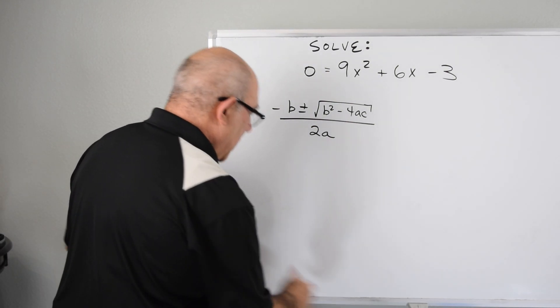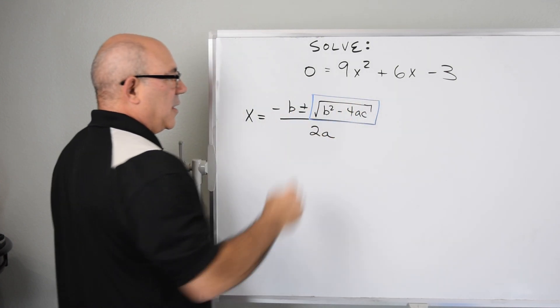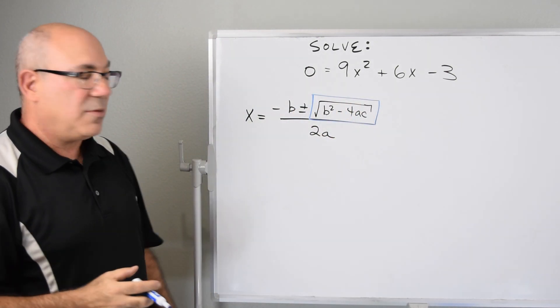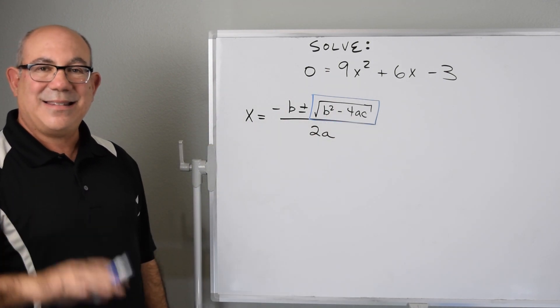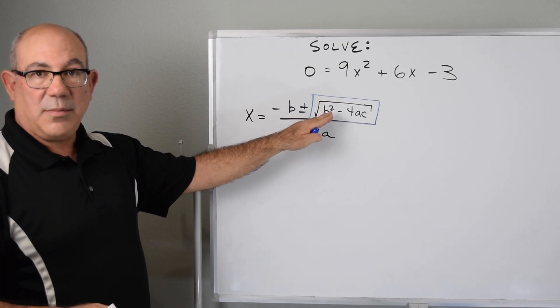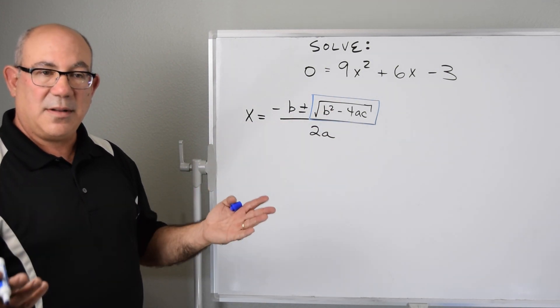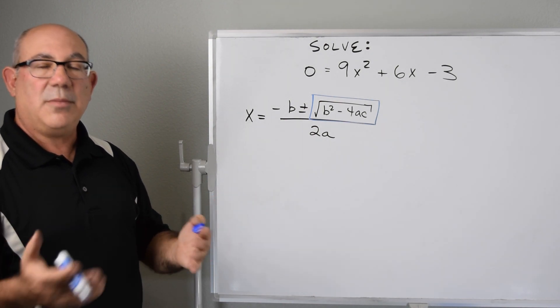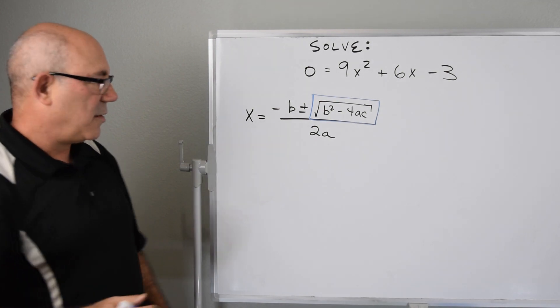So what we can do is we can examine what this part is and we can then know whether it's going to be real or complex. If what's inside here is less than zero or negative, then this will be in the complex realm. But if it's greater than zero, it'll be positive. And then we can take the square root of a positive number and we get a real number. And we're home free in the real world.